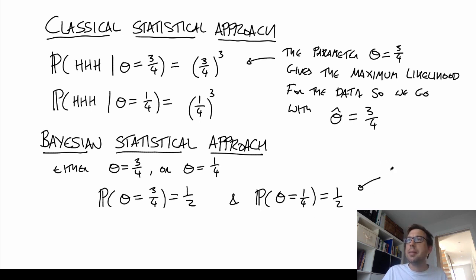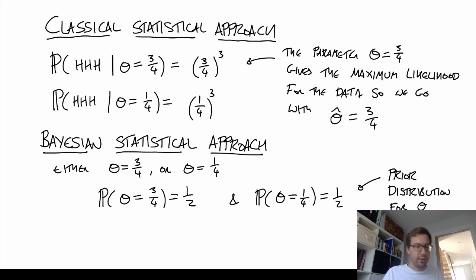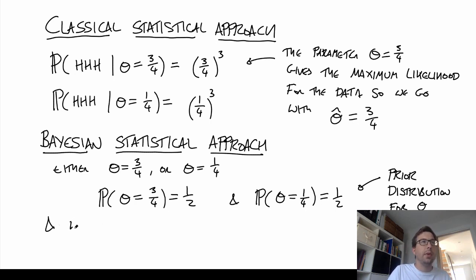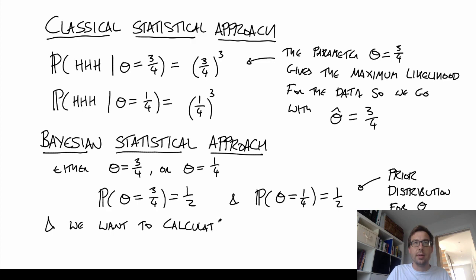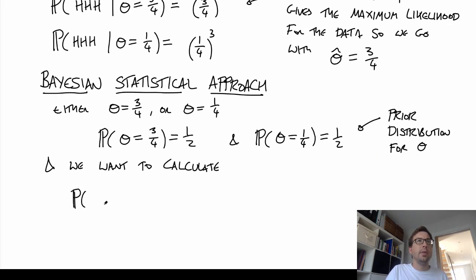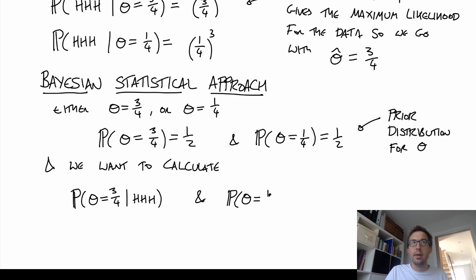This is called our prior distribution for theta. What we want to do is update our information about these distributions given the data we've been given so far. We want to calculate the probability that theta equals three-quarters given I observed heads-heads-heads, and the probability that theta equals one-quarter given I had heads-heads-heads.